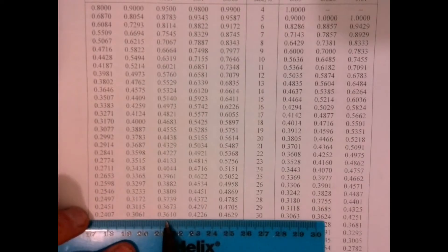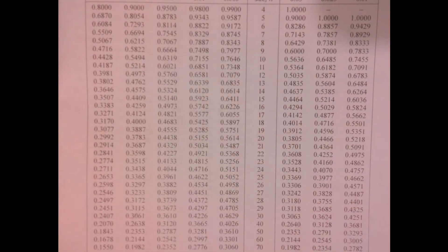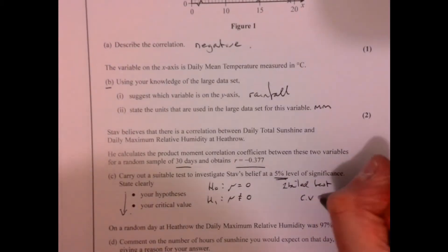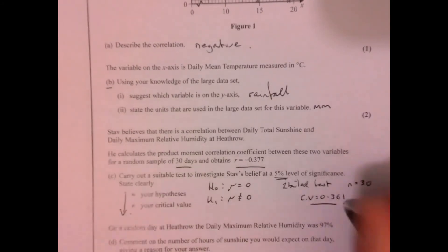The value we're looking at is this one here. This is our critical value. I just read that off - it's 0.361. That's our critical value.